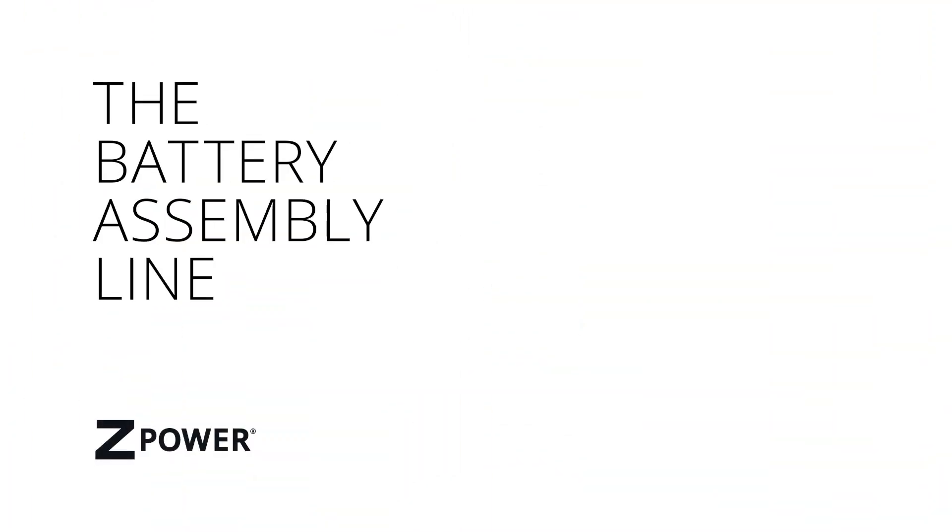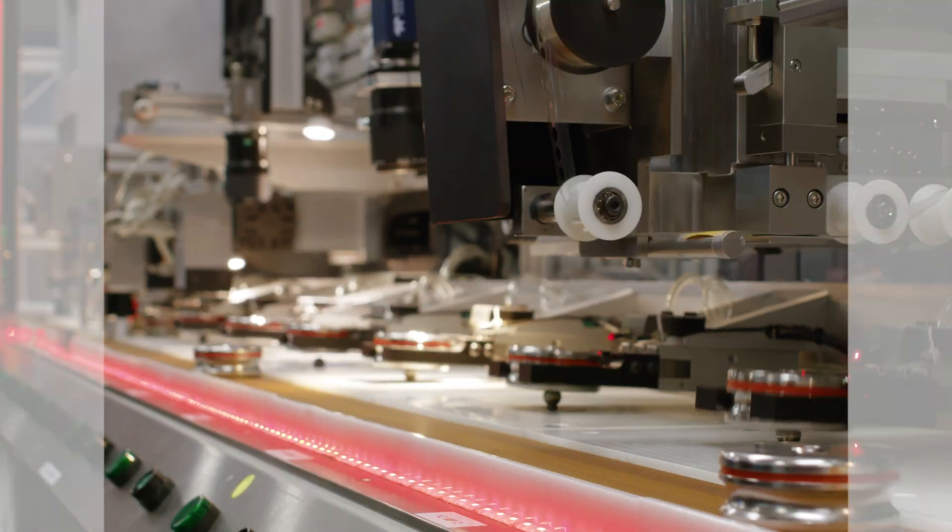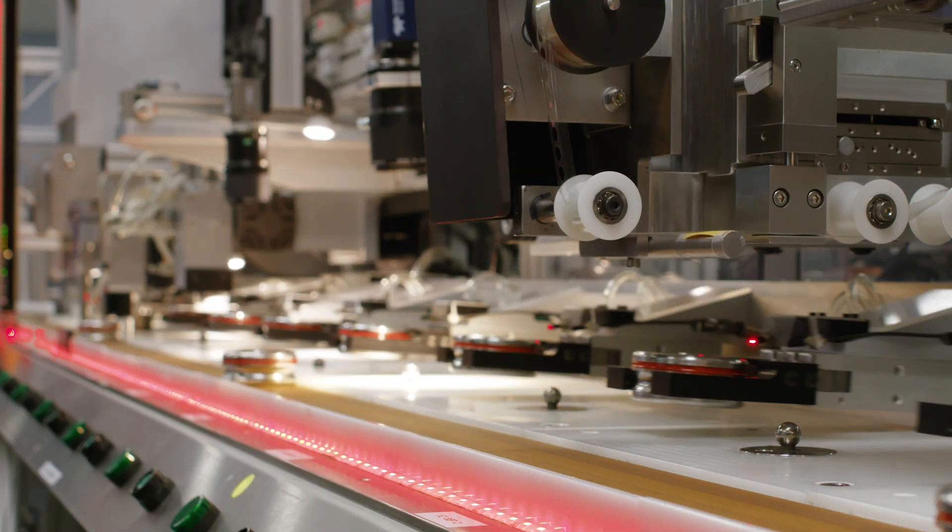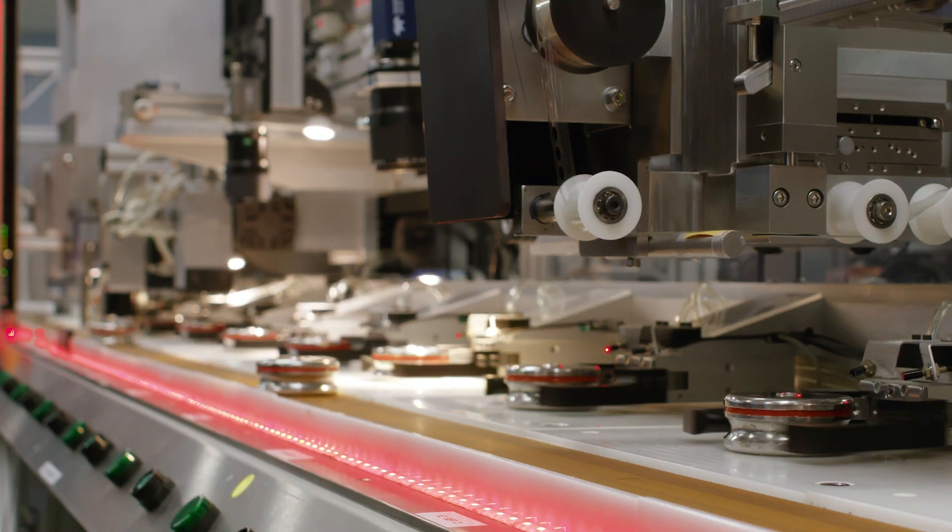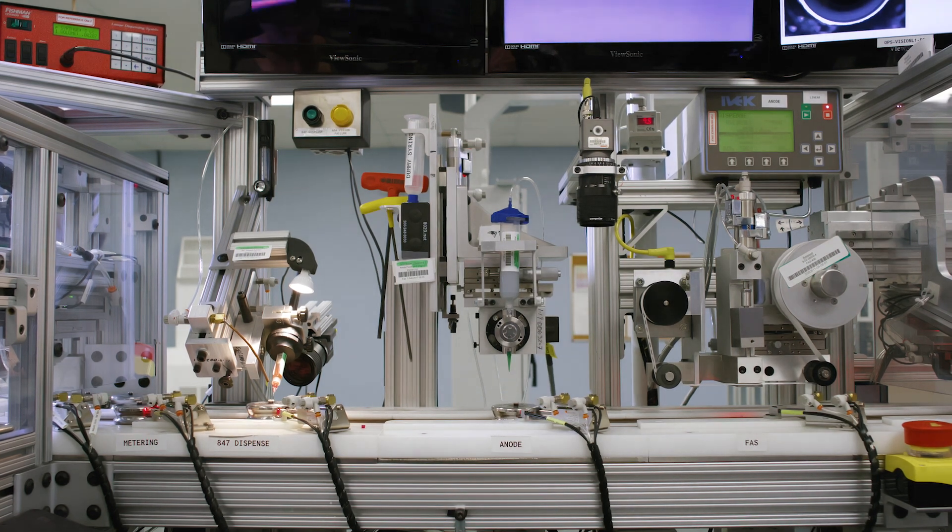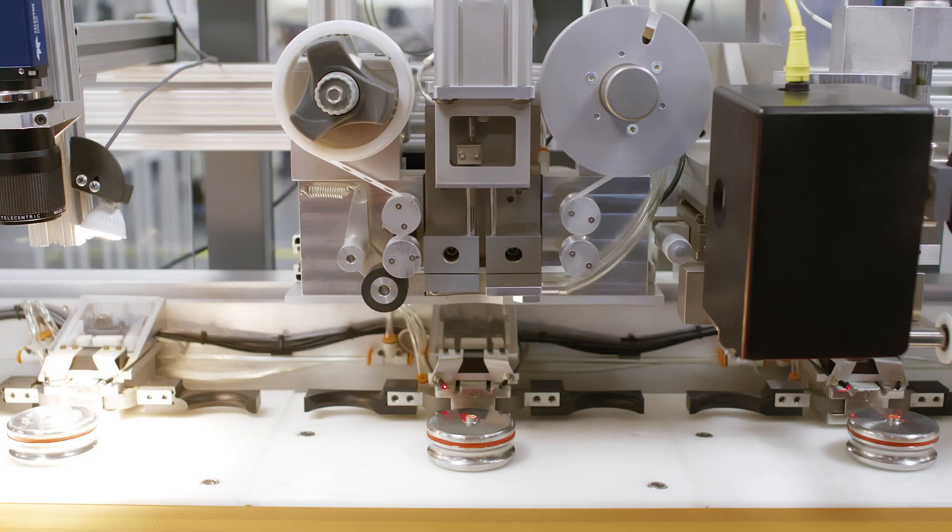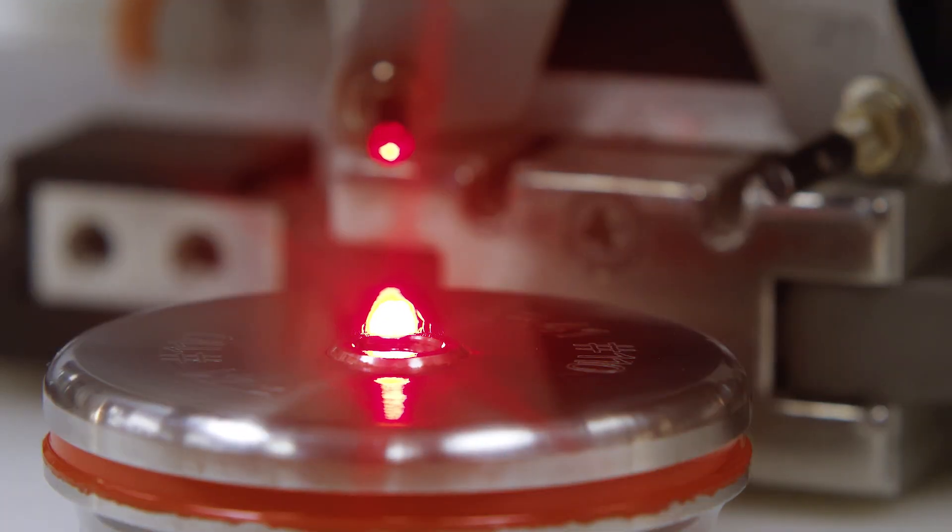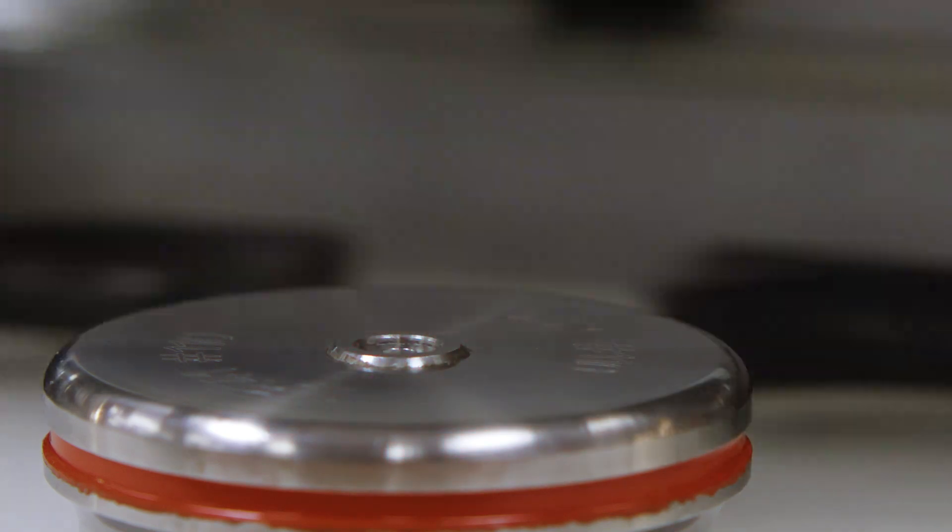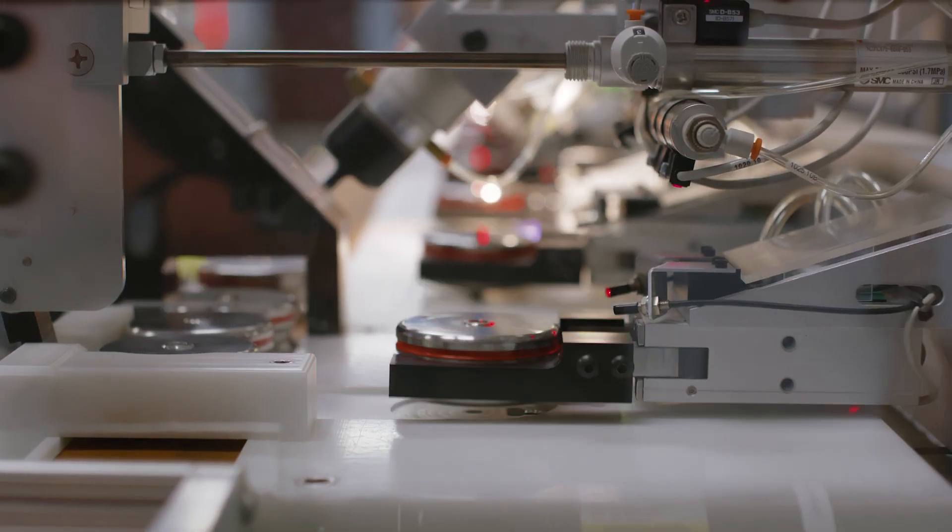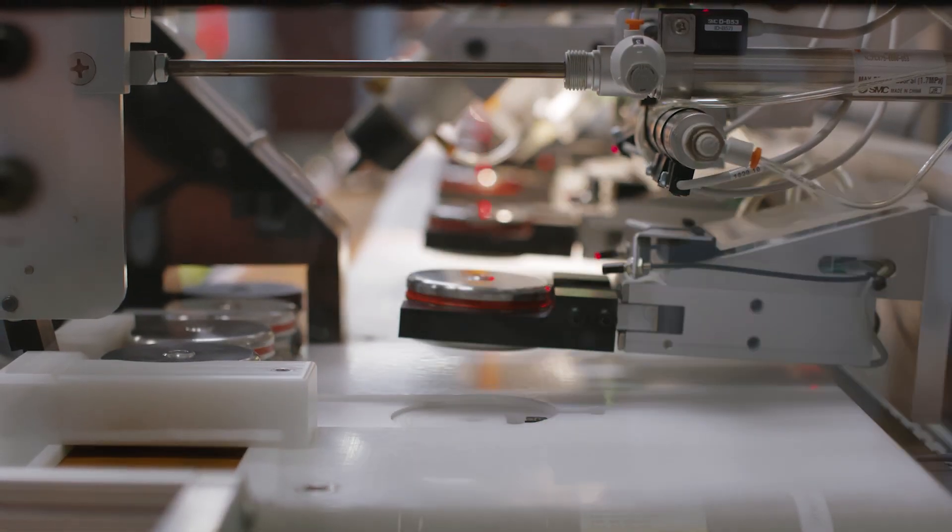The battery assembly line: The production line has a light curtain, an invisible laser beam system which protects the line from interference and keeps operators safe from the automated system. If anything crosses the beam, the line immediately shuts down. The production line consists of greater than 30 individual stations.